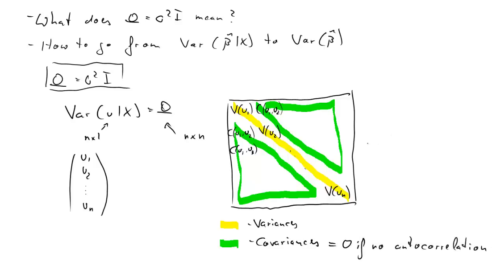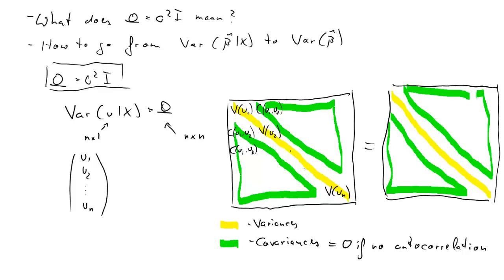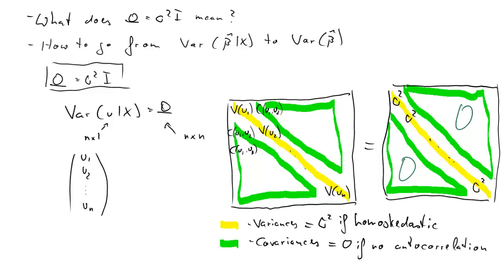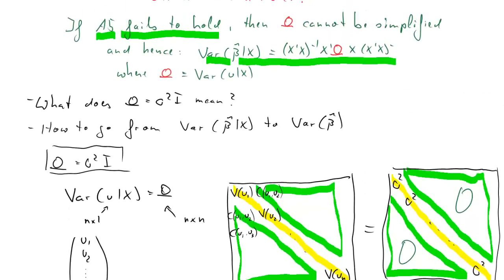If we have no autocorrelation, we get zeros on the off-diagonal. If we also have homoscedasticity, each variance for all individual error terms is the same — sigma squared appears on every diagonal element. That means we can simplify omega to sigma squared times the identity matrix. So omega equals sigma squared times I when we have both homoscedasticity and no autocorrelation.